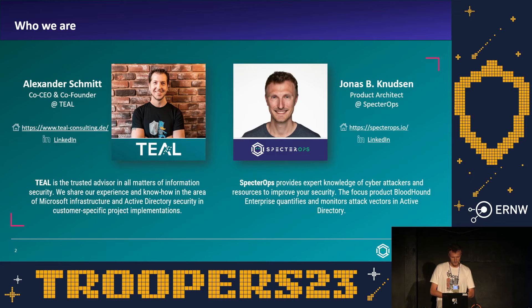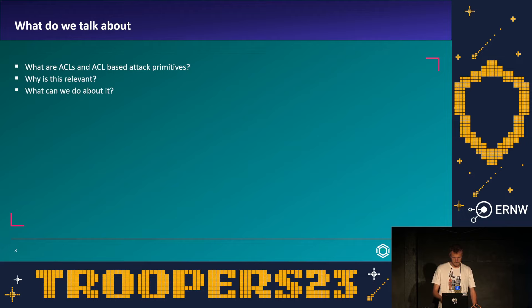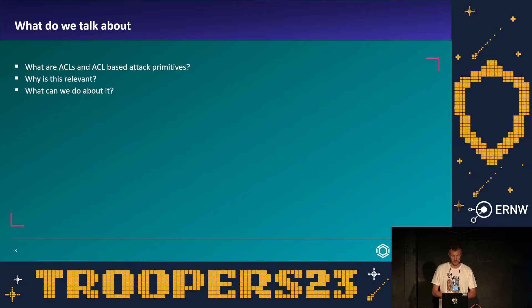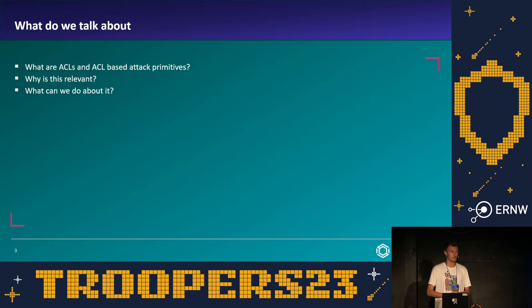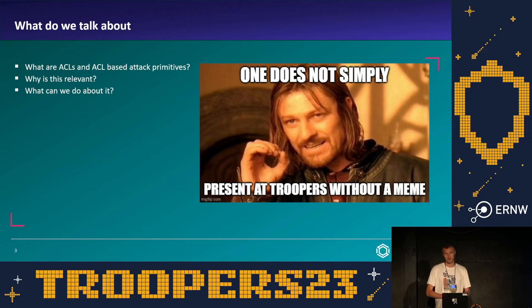Let's get started. We are going to talk about ACL-based attack paths within Active Directory — first what these ACLs are and how these attack narratives exist, then why this is still relevant and what we see in the industry, and finally how organisations can defend themselves. If you make it all the way through, we have stickers, pens, and books you can grab so we don't have to carry them home.